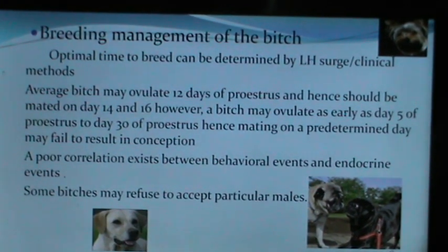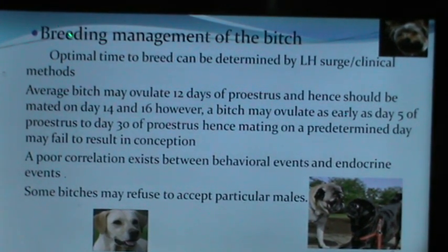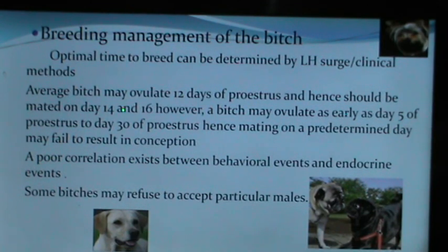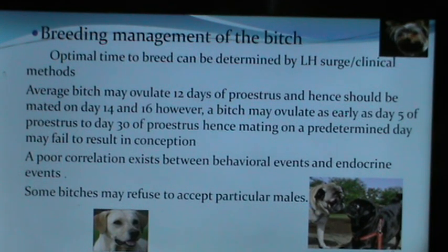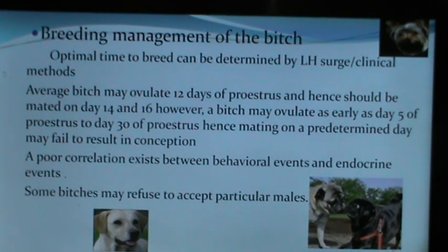The optimal time to breed can be determined by the LH surge or clinical methods. The average bitch may ovulate at day 12 of proestrus and should be mated on days 14 and 16. However, a bitch may ovulate as early as day 5 or as late as day 30 of proestrus. Hence, mating on a predetermined day may fail to result in conception — a poor correlation exists between behavioral and endocrine events.